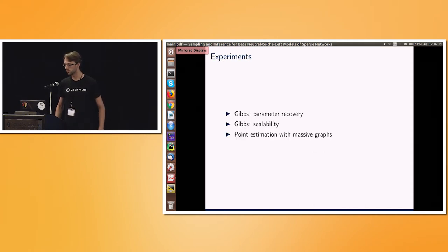So in fact, we can show analytically, empirically rather, that we get some good results. So with our Gibbs sampler, we're interested in recovering parameters. We're interested in scalability with respect to a number of edges. And for really massive graphs, we want to do some point estimates just to get an approximation.